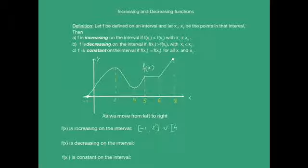From the graph we observe the function f of x is increasing on the closed interval negative 1 to 2 and closed interval 4 to 5 and then again closed interval 6 to 8, and it's decreasing in the closed interval 2 to 4.